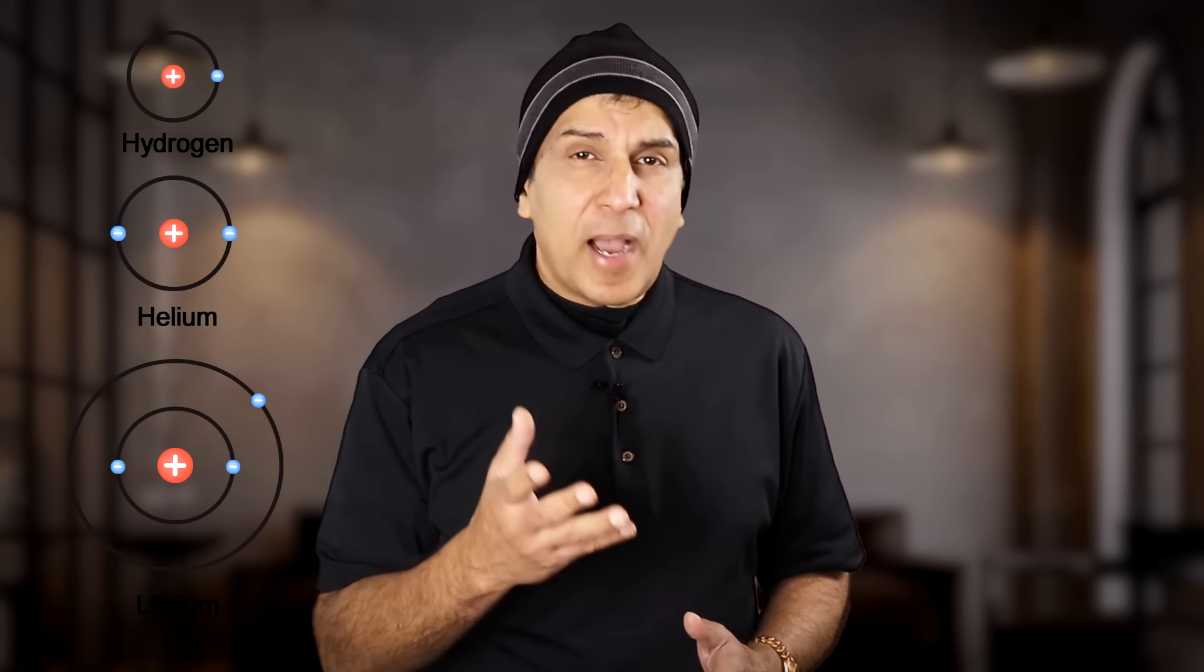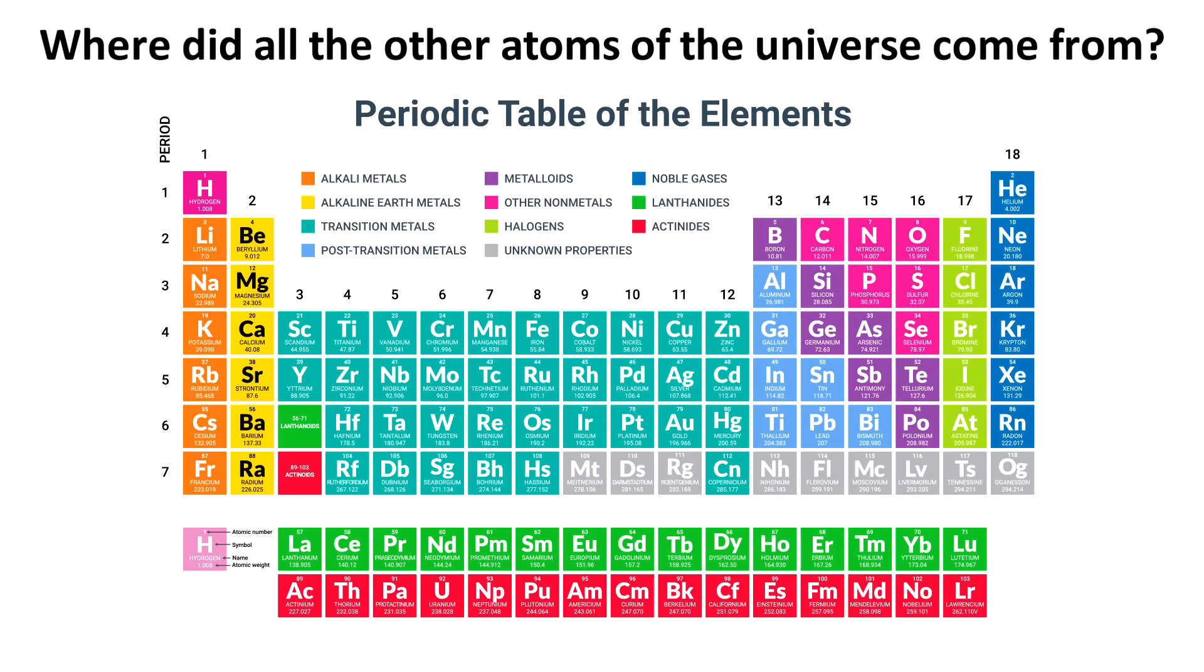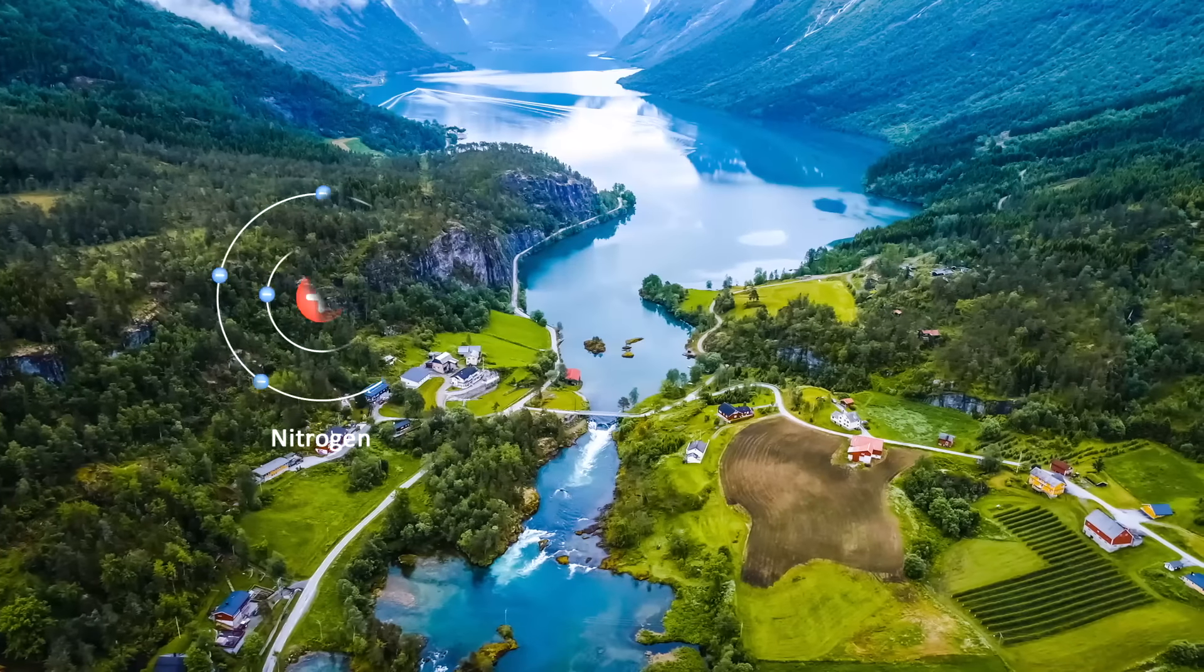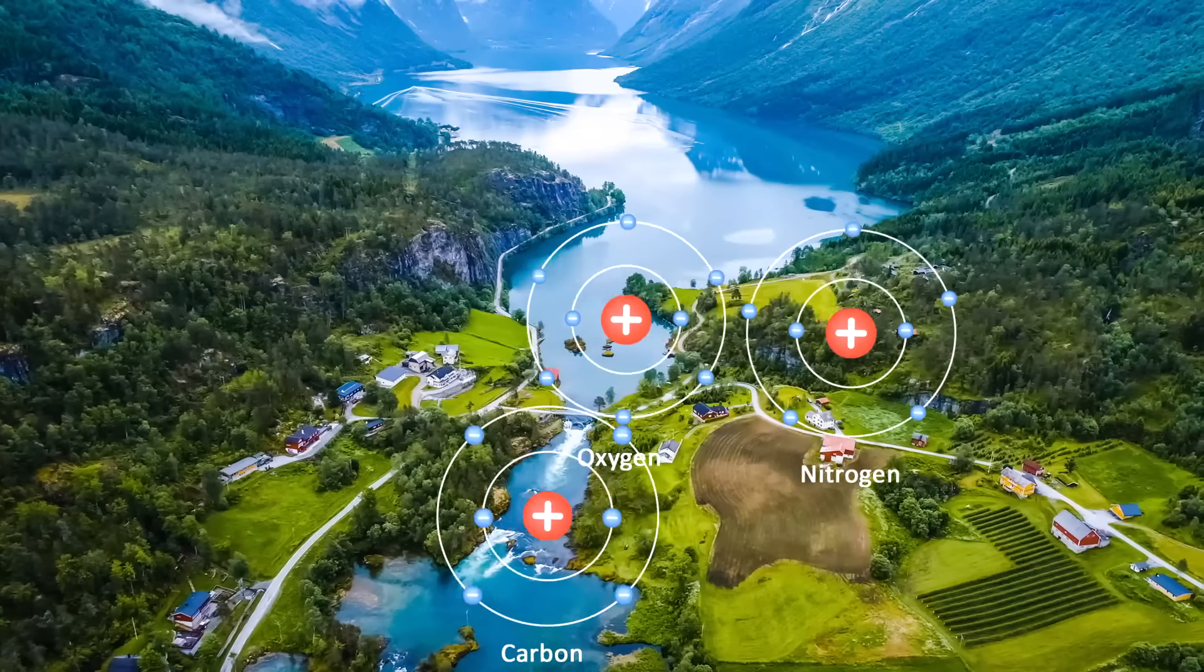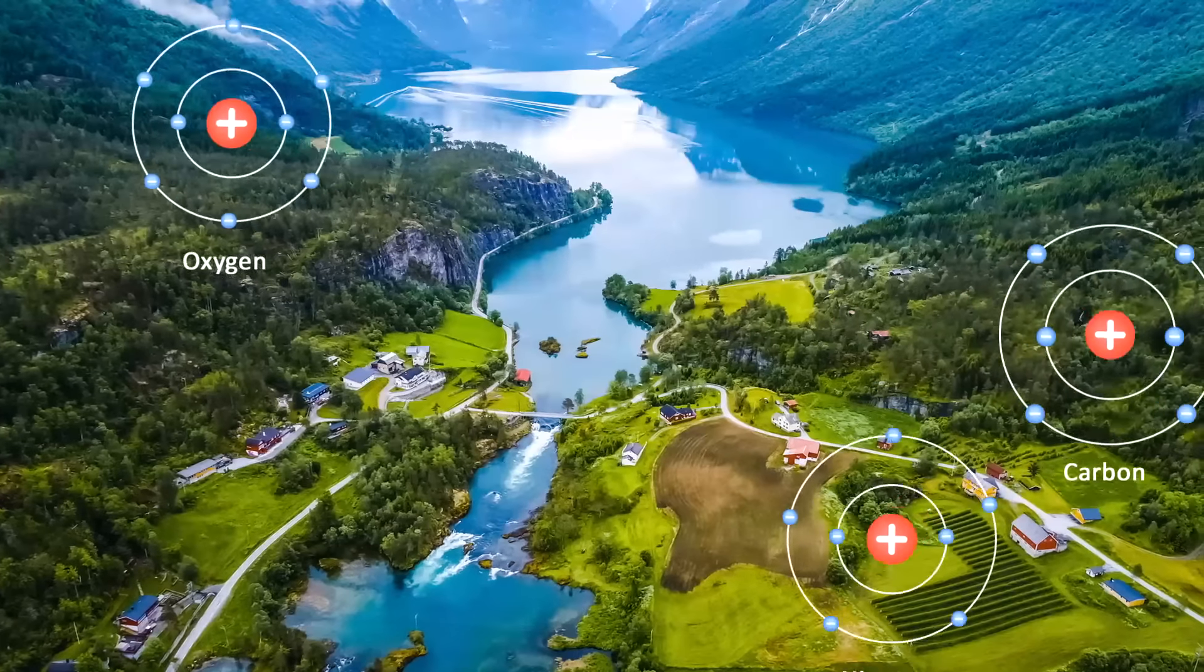The story of how the first atoms in the universe formed is only the beginning of the fascinating journey of atoms. It is a story of only how the lightest elements formed—hydrogen, helium and lithium, and some isotopes. But as you know, we need a lot more than that for life to exist. So the next question is, how did the rest of the elements of the periodic table form? Particularly, where did carbon, oxygen, and nitrogen, elements essential for life, come from? That fascinating story will be the subject of my next video. So stay tuned for that.